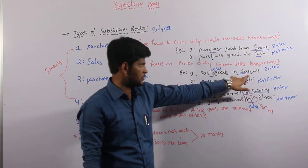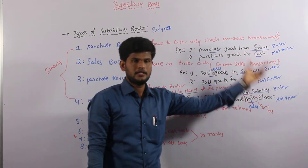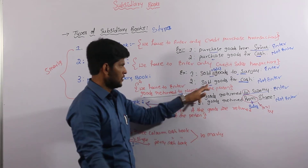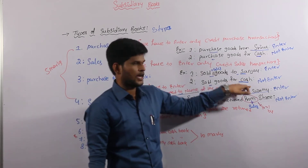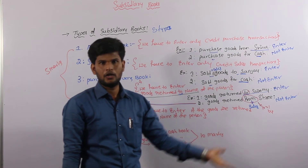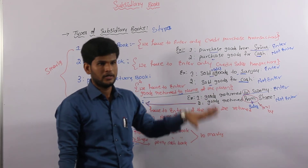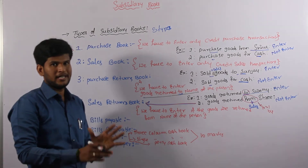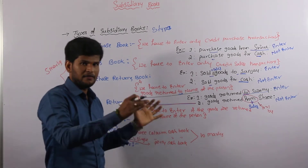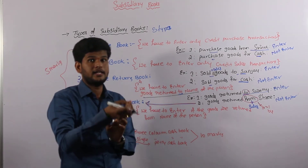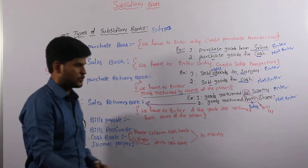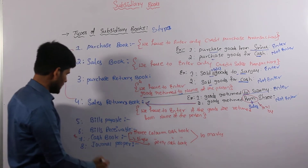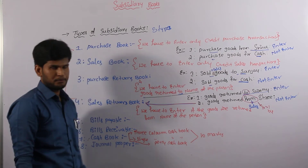Sold goods to a person on credit — this transaction will be converted into the debit side of the cash book. Sold goods for cash — it will be converted into the debit side of the cash book. We have to identify these, but for now I am not explaining clearly about the cash book. Definitely we are going to learn each and every detail in our next chapter on cash book.